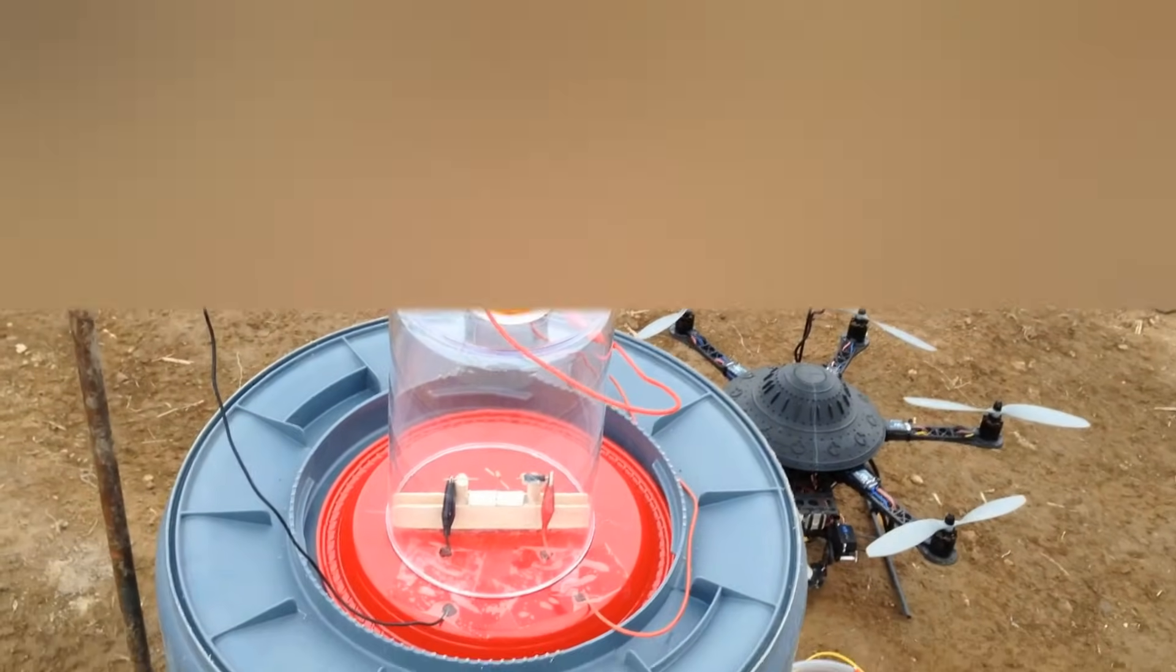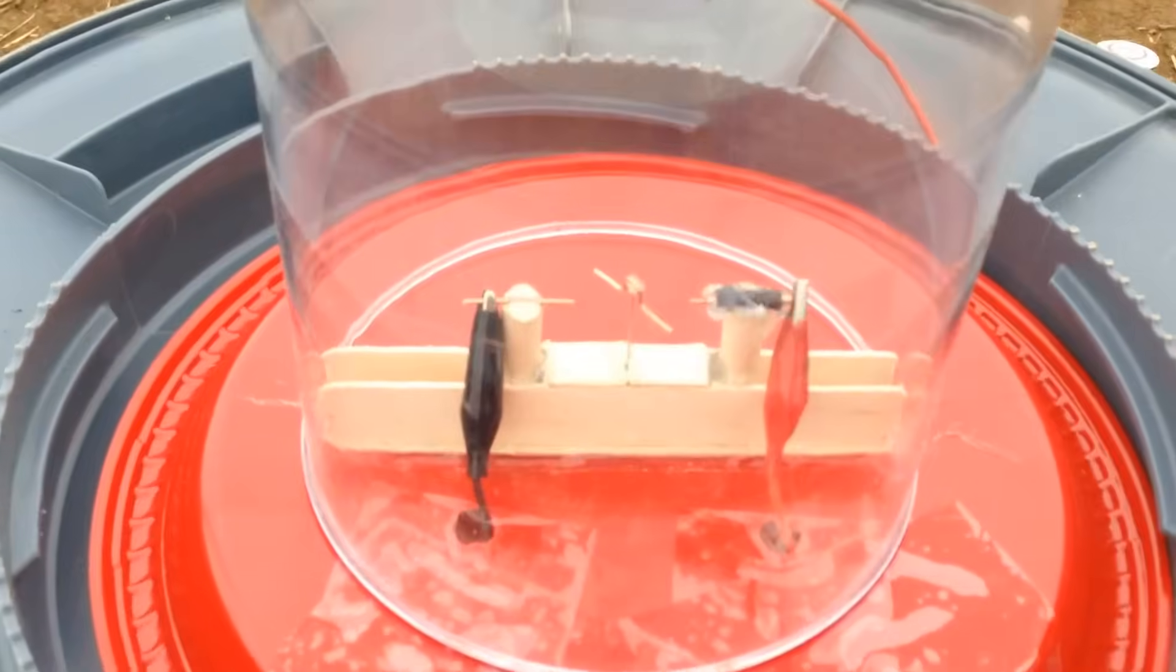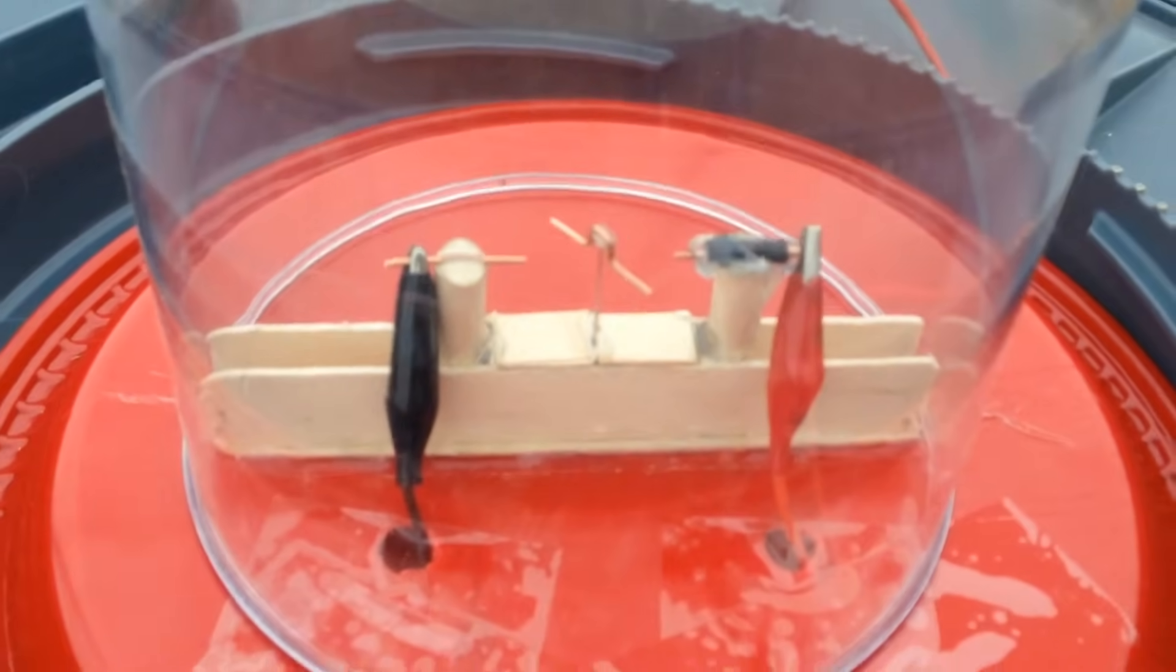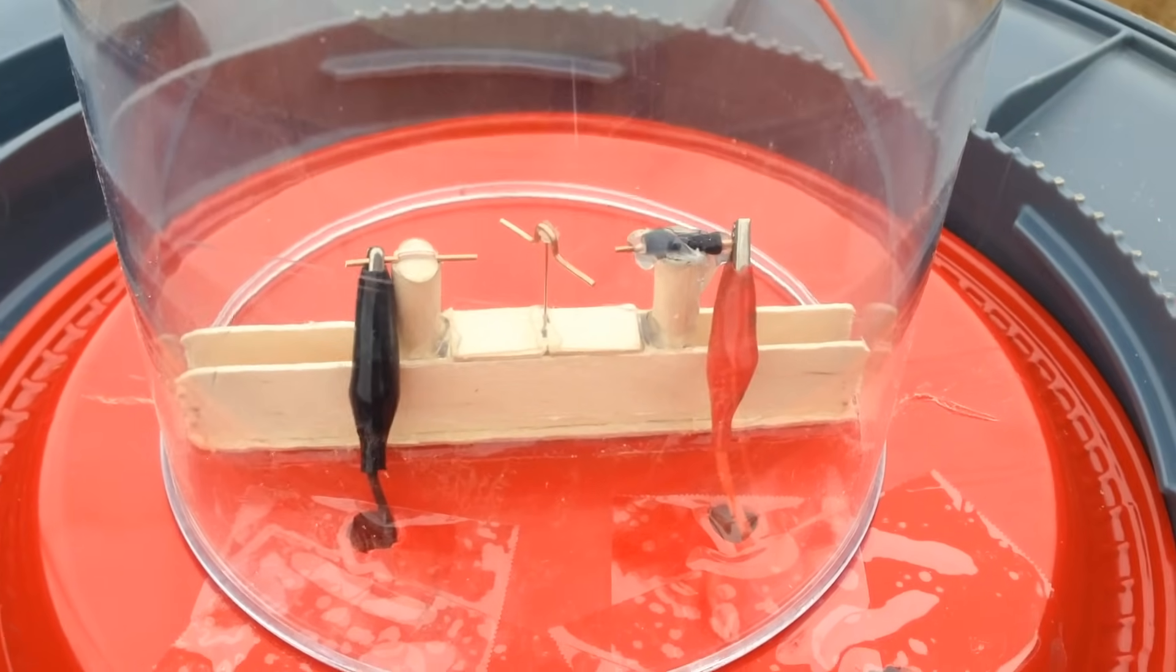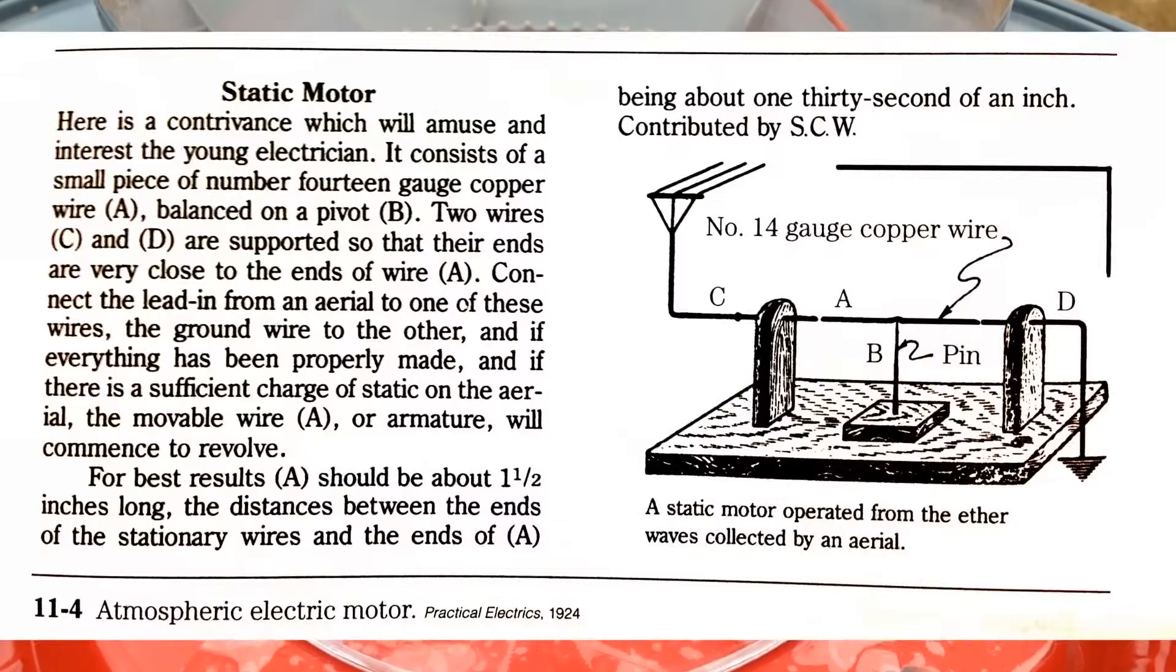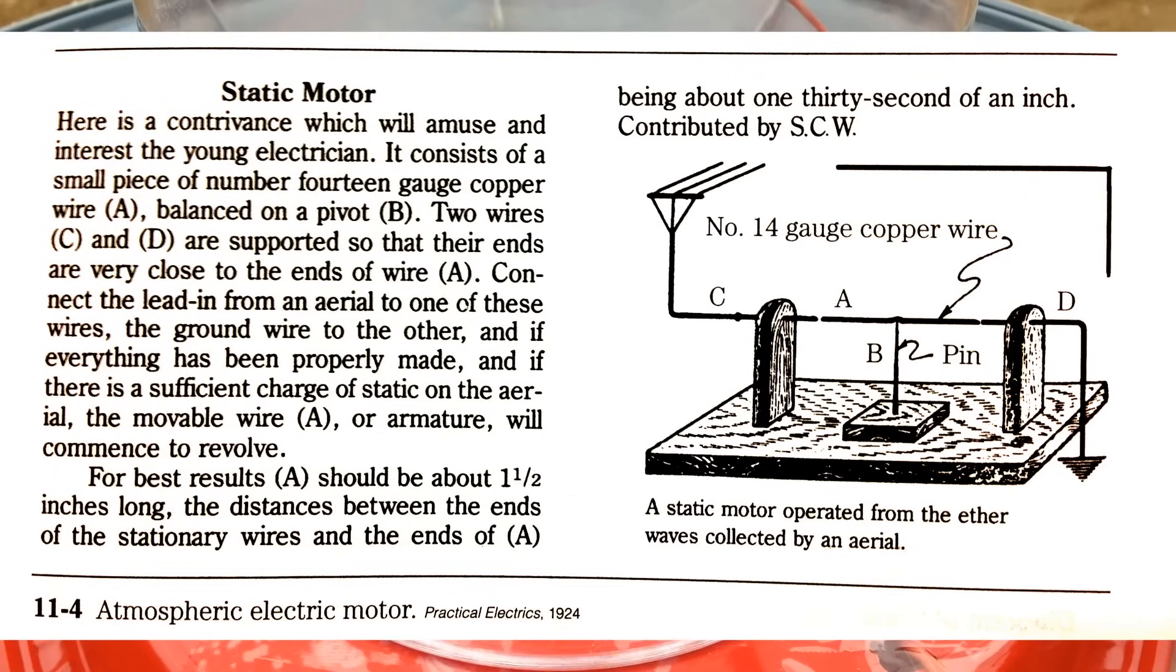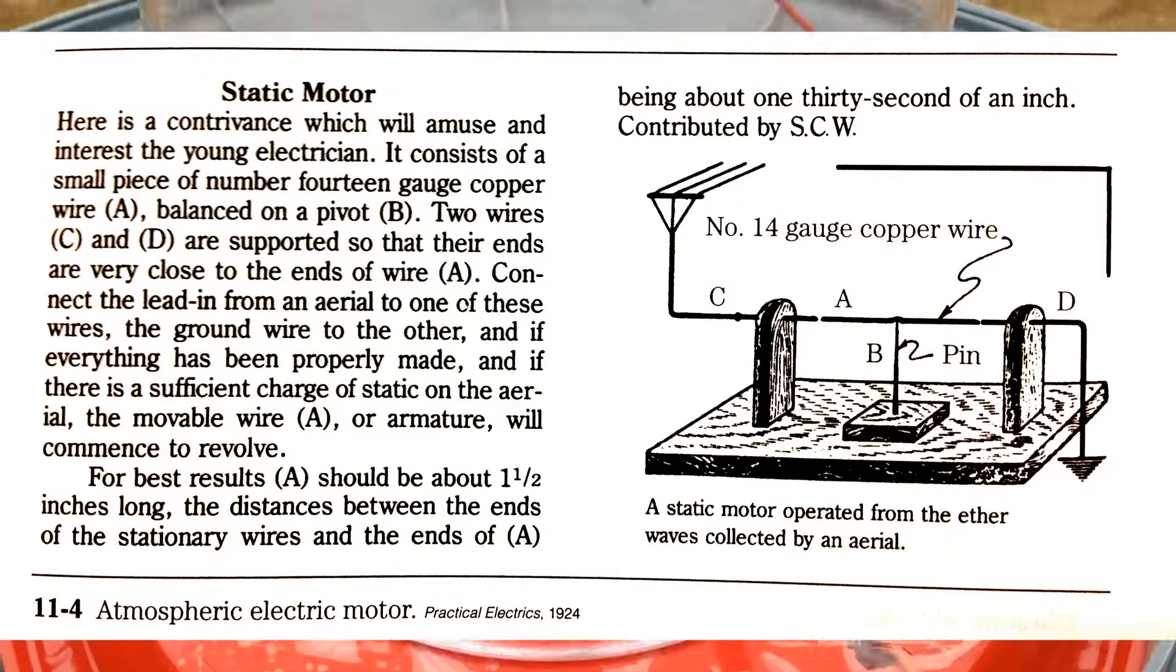Okay, so this experiment's going to demonstrate the capturing of atmospheric electricity, and this is a small electrostatic motor. I came across this motor in the book Homemade Lightning, and that showed a motor design from 1924 Popular Electrics. It looked so simple, and I thought, could it really be that simple folks? So I decided to do a test.